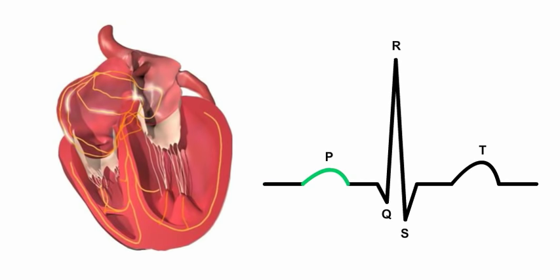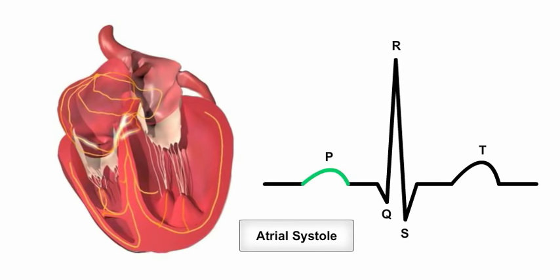The signal spreads across both atria, causing the muscle cells to depolarize and contract, inducing a phase known as atrial systole. On the ECG, this atrial depolarization is represented by the P wave.